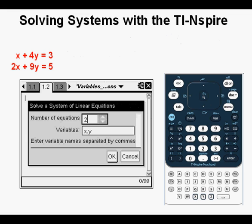We have this system of equations to evaluate. It's x plus 4y equals 3 and 2x plus 9y equals 5. We see that we have two equations here in the number of equations field, so that's okay. And we have the default variables of x and y in the variables field. Since everything is correct, we can tab down to the OK button. Press Enter.